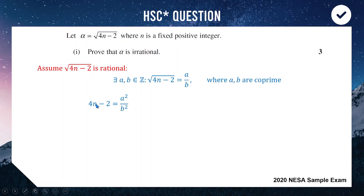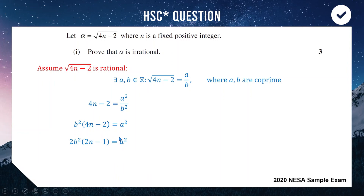Squaring both sides: 4n − 2 = a²/b². Multiplying through by b²: b²(4n − 2) = a². We factor the 2 out of 4n − 2, giving 2 × b²(2n − 1) = a². This shows a² = 2 × something, so a² is even, which means a is also even, and we can write a = 2k.